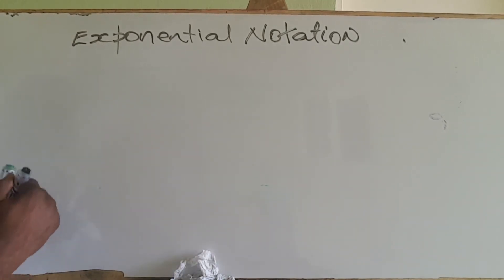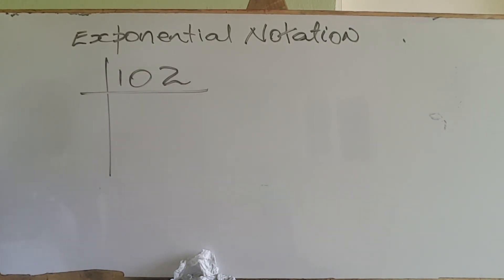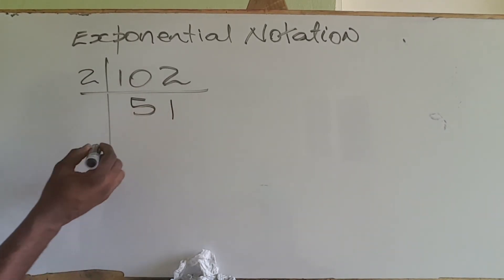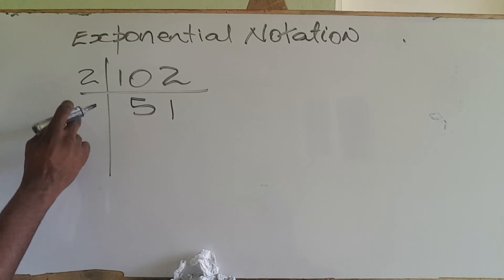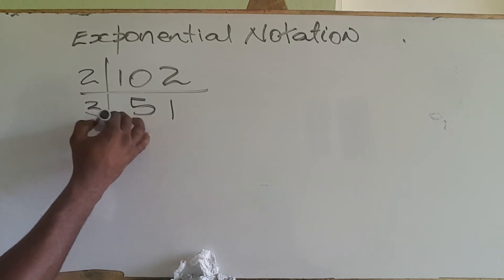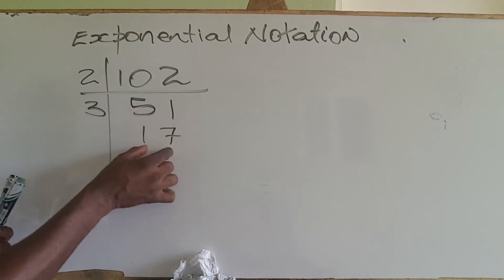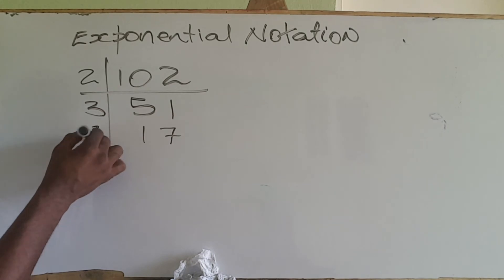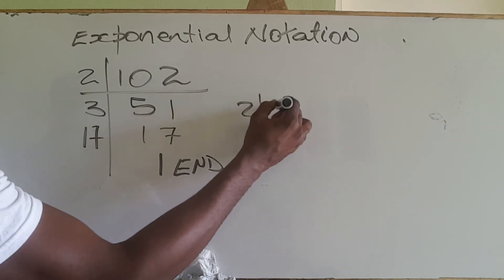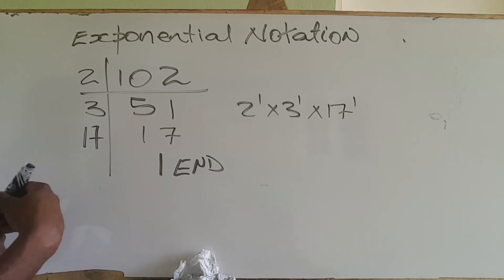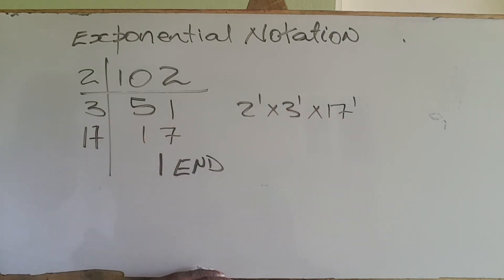Let's try one more — 102. 2 into 102 gives us 51. 2 won't work anymore, so we use 3. 3 into 51 is 17. Then 17 is a prime number, so 17 into itself is 1 — we are at the end. Therefore, 102 = 2¹ × 3¹ × 17¹, or we could say 6 × 17 = 102.